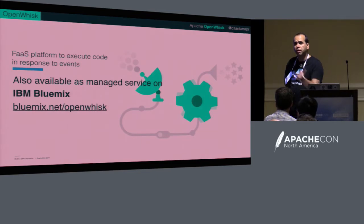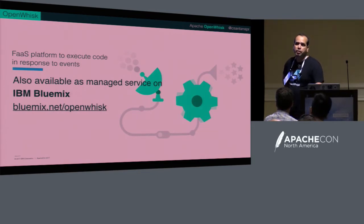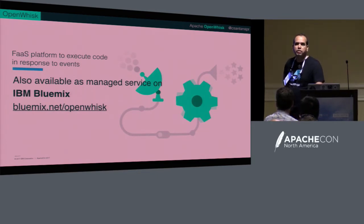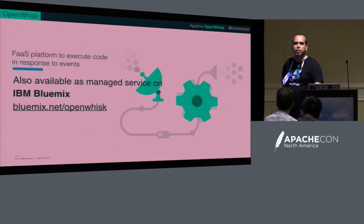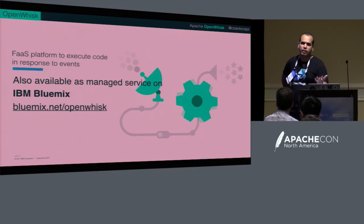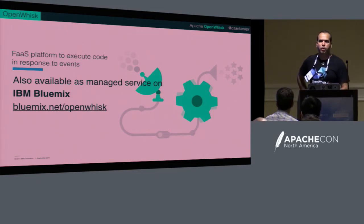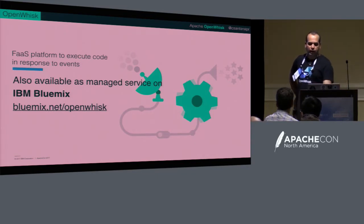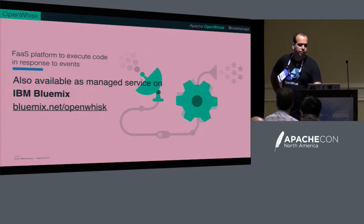We have it as a managed service in Bluemix. You can get a free account and get a certain amount of actions for free per month, similar to Amazon Lambda and others — 400 gigabyte-seconds.